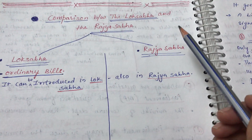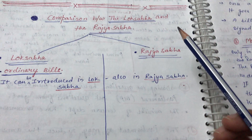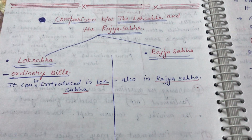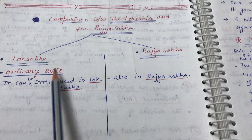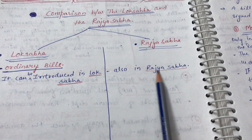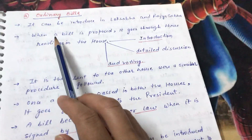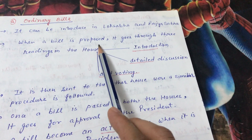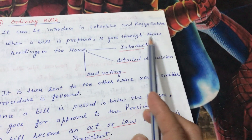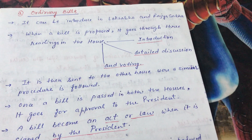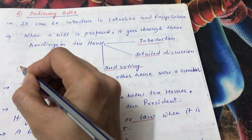Now a comparison of Lok Sabha and Rajya Sabha. For ordinary bills, a bill can be introduced in either Lok Sabha or Rajya Sabha. When a bill is proposed, it goes through three readings.